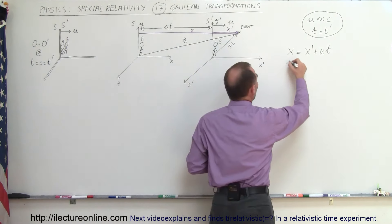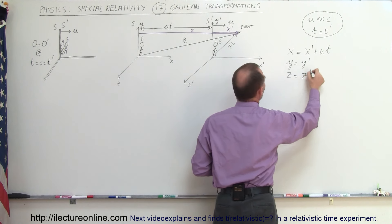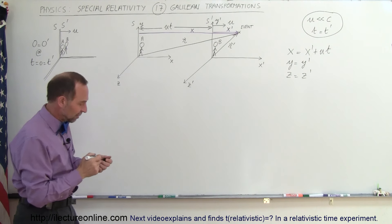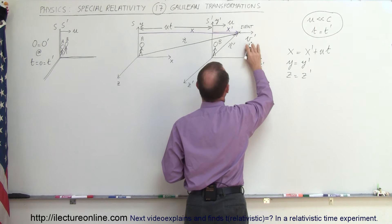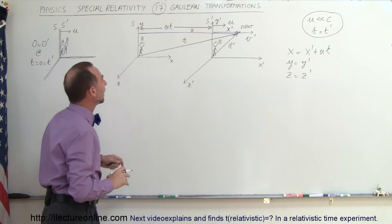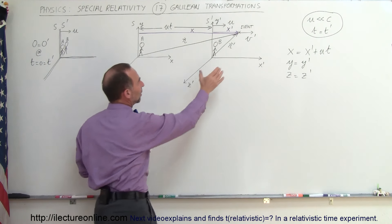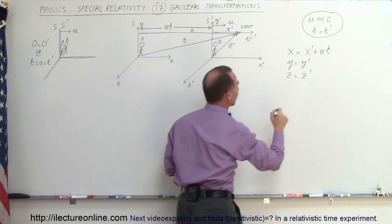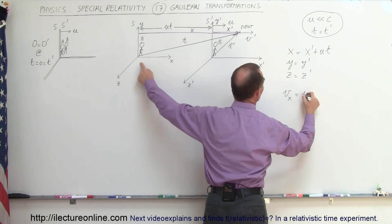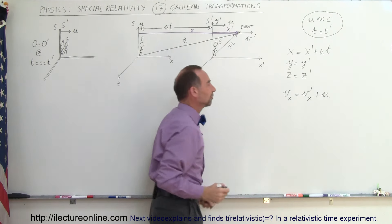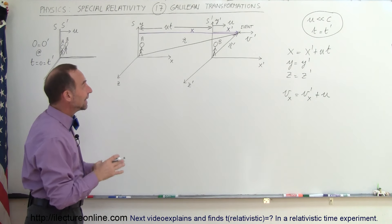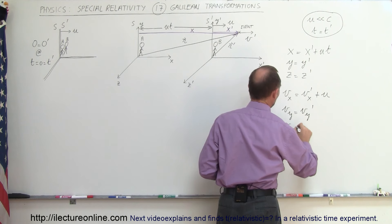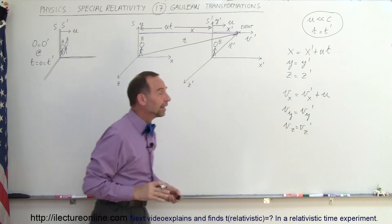Now, what about velocity? If the event is moving at velocity V prime as seen by observer B in the moving reference frame, what is the velocity according to observer A? Since the reference frame is moving to the right at U, the velocity seen by A is V prime plus the velocity of the reference frame. So the velocity in the X direction as seen by A equals V prime in the X direction plus U. The velocity in the Y and Z directions would be the same in both frames, since the reference frame is not moving in those directions.